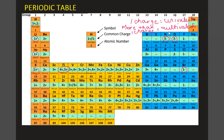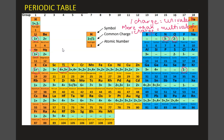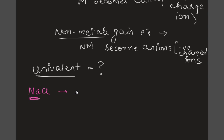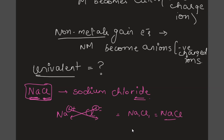Now that we understand univalent and multivalent, let's apply this to naming ionic compounds. Let's say we're given NaCl. Na is one positive and Cl is one negative, so this is univalent. For univalent ionic compounds, you just name the metal as-is — so sodium — and the non-metal name ends with '-ide' — so chloride. The name is sodium chloride. Using the crisscross method: the charges crisscross to give Na1Cl1. Since the subscript is 1, we don't write it, giving us NaCl — sodium chloride.